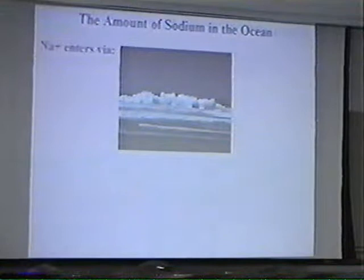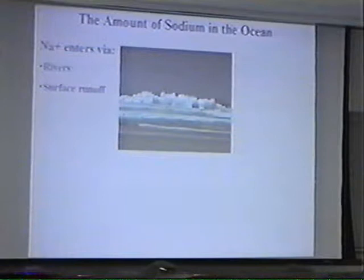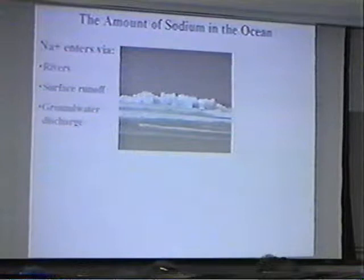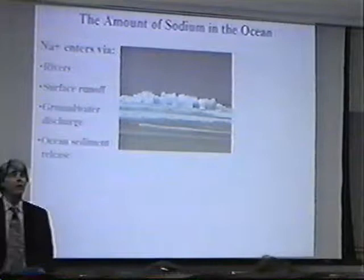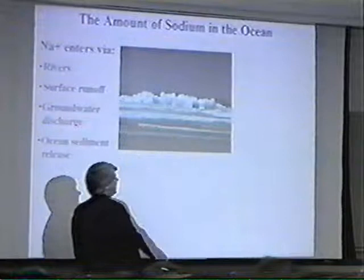If you look at the ocean, you'll find that sodium — the sodium ion from salt — enters the ocean in certain ways. Rivers dump sodium into the ocean. Surface runoff scrapes sodium off the topsoil and brings it into the ocean. Groundwater flows underneath the ground and ends up dumping into the ocean. And ocean sediments tend to release sodium over time. These are the basic ways that sodium gets into the ocean.